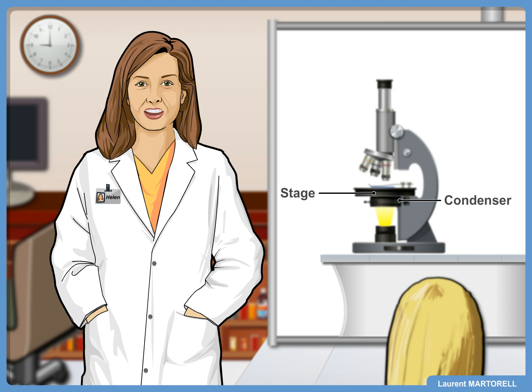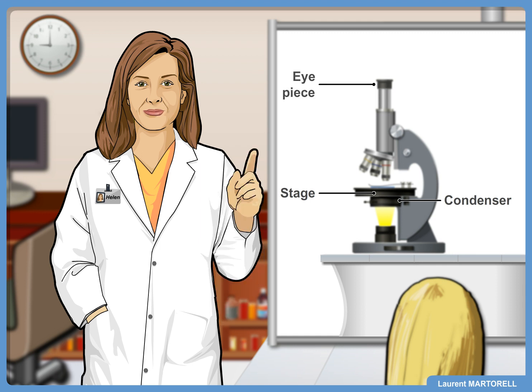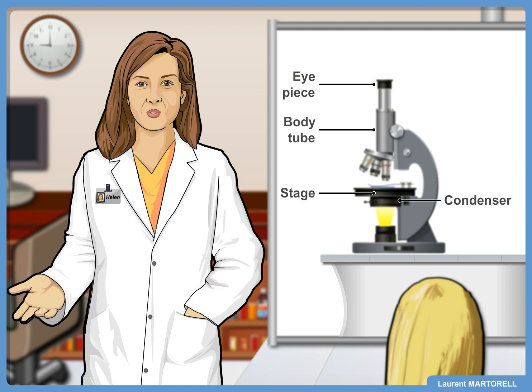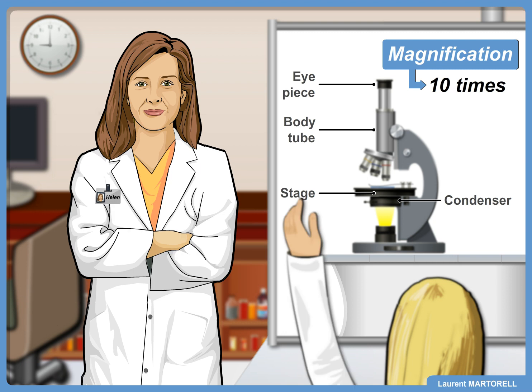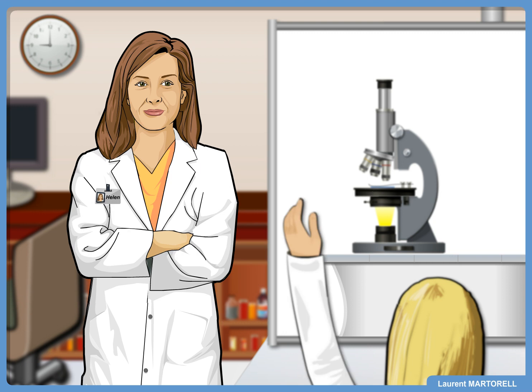The next magnifying part of the microscope is the eyepiece. It is connected to the objectives by the body tube. The eyepiece generally has a magnification power of 10 times, which means that a microscope has two magnifying units.